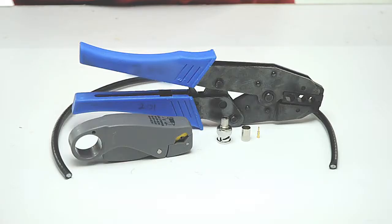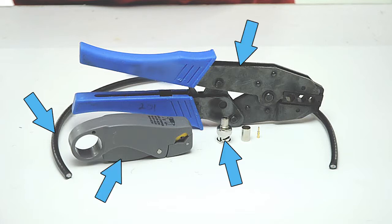For today's project we're going to need RG59 and RG62 PVC cable, a BNC male crimp connector, a coax stripper, and a crimp tool.